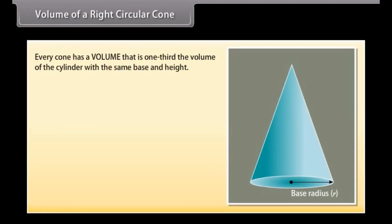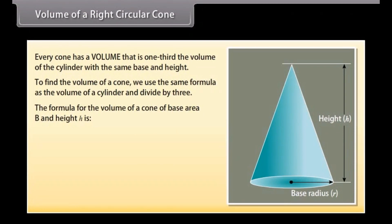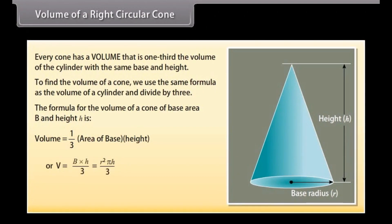Every cone has a volume that is one-third the volume of the cylinder with the same base and height. To find the volume of a cone, we use the same formula as the volume of a cylinder and divide by 3. The formula for the volume of a cone is V = (1/3) × B × H = (1/3) × π × R² × H.